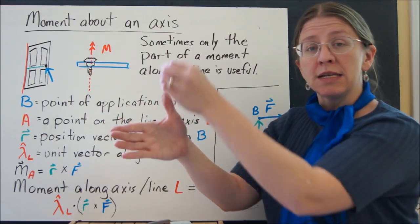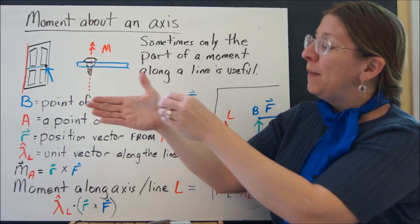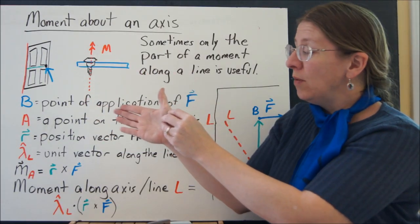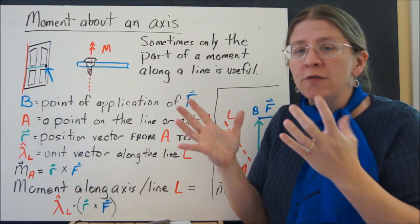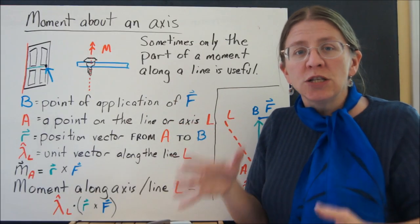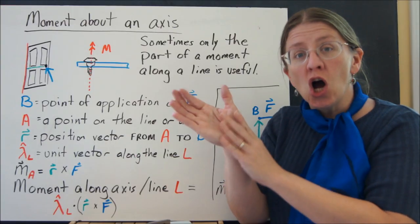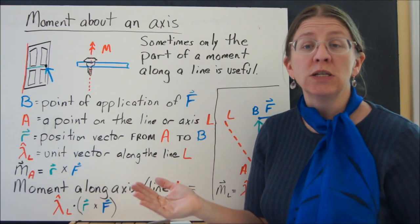So if we talk about the axis like your thumb being the axis, what I want to know is how much of the moment—if you take the magnitude of your vector, how much of that magnitude is actually along that axis and how much of it is wasted effort?